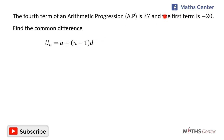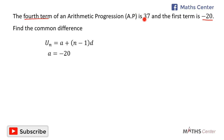The question tells us that the first term is negative 20, so A is equal to negative 20. It also says that the fourth term is 37, so U4 is equal to 37.